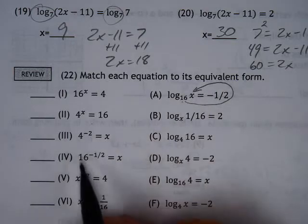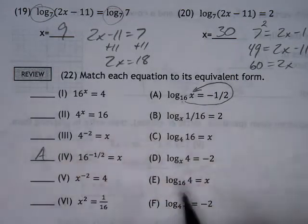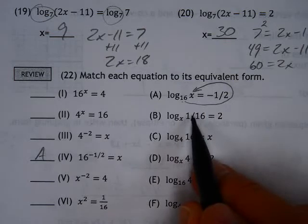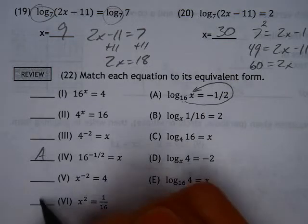16 to the 1 half power equals x. I see that right here, so this is A. x to the second power equals 1 over 16. Well, that's B.